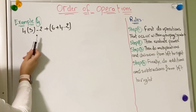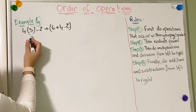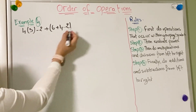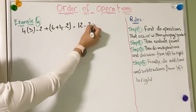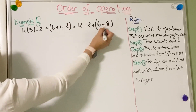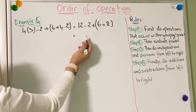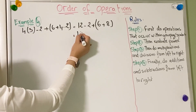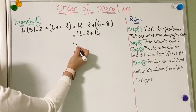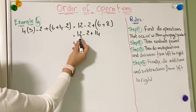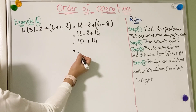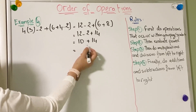In this example, I'd like you to stop the video and try it yourself, then come back to check the solution. We start with multiplication: 4 × 3 = 12 and 4 × 2 = 8. Then handle the grouping: 12 − 2 + 6 + 8 gives a group result of 14. Working left to right: 12 − 2 = 10, then 10 + 14 = 24.